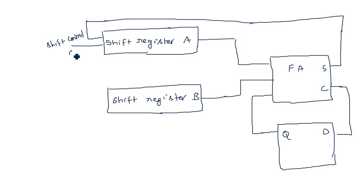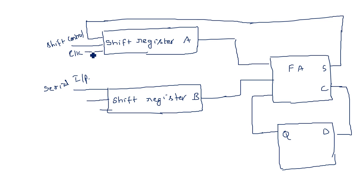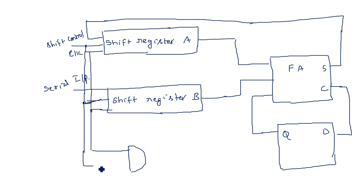Each shift register has three inputs: the serial input, shift control, and clock. We also have an AND gate along with the two shift registers which takes the same shift control and clock inputs. The output of this AND gate is connected as the clock input for the D flip-flop.